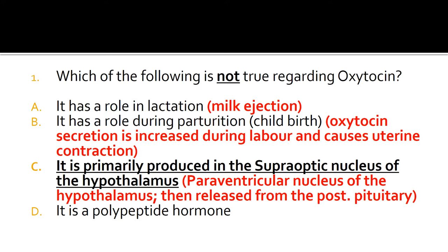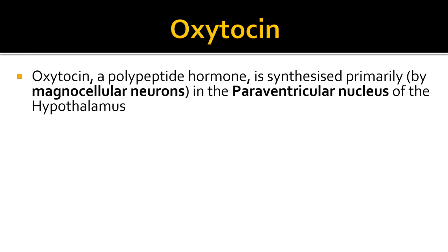Oxytocin is then released from the posterior pituitary. It has a role in lactation and milk ejection. Oxytocin secretion is increased during labour and causes uterine contraction. Oxytocin is a polypeptide hormone.